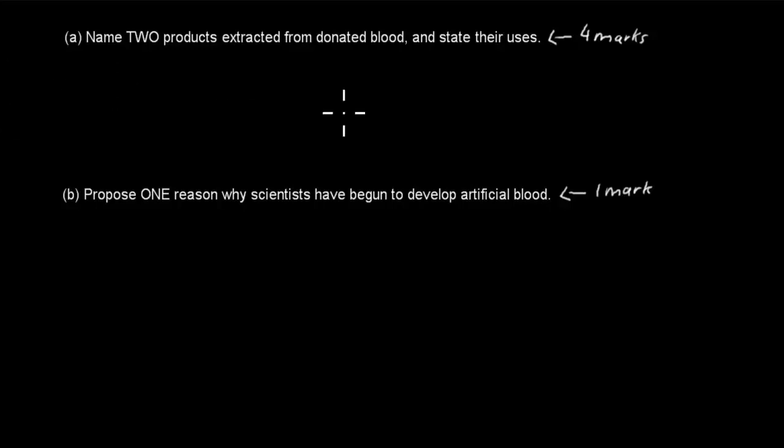Welcome back. Alright, so for this question there's an A and a B part. Now for the A part, you can look at the marks. It's four marks, so it's worth a lot of marks. For a relatively simple question, it says name two products.